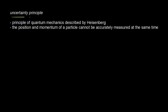The Heisenberg uncertainty principle is a principle of quantum mechanics. If we take a particle of mass m moving with velocity v, the momentum of that particle — the linear momentum — is equal to the mass times the velocity.